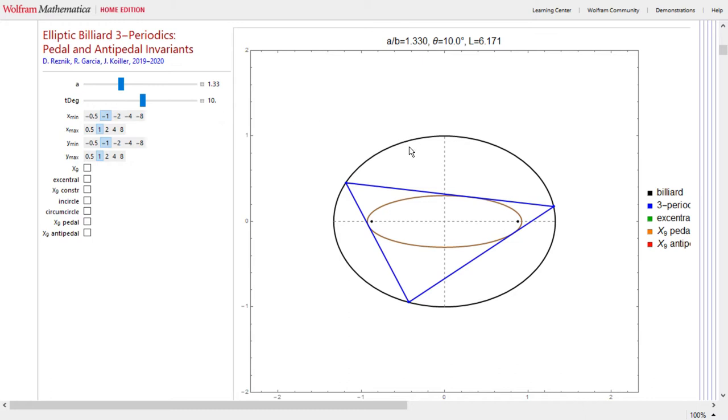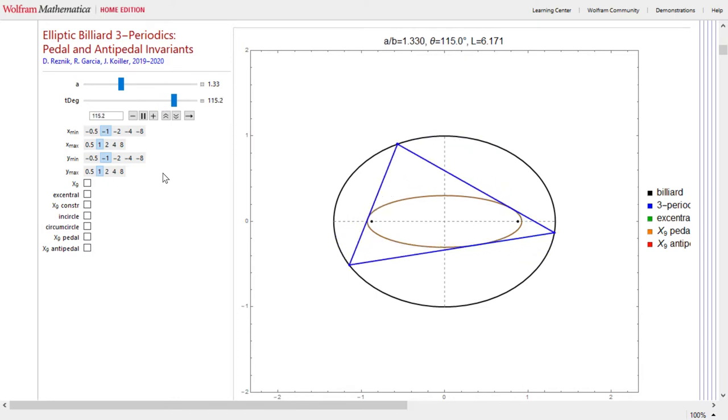Consider an elliptic billiard shown in black here. It's a family of three-periodics, these blue triangles. Let's go ahead and animate them. You can see that these triangles are all tangent to an elliptic caustic which happens to be confocal with the elliptic billiard itself.